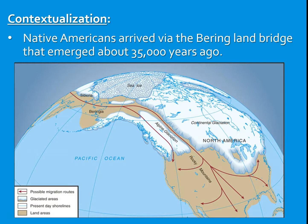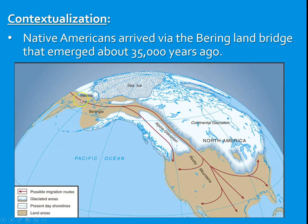First, we need to get the Native Americans here, which requires some historical contextualization. Historians believe that Native Americans arrived on the North American continent via Asia — basically from what we call Siberia today. They walked across a land bridge known as Beringia during the most recent ice age, probably about 30,000 years ago, and moved south until they had settled all of North, Central, and South America. During the ice age, so much of the world's ocean water was locked up in huge glaciers that the ocean level dropped, exposing what is now a shallow sea as dry land. They were likely following the path of animals they used as food sources.